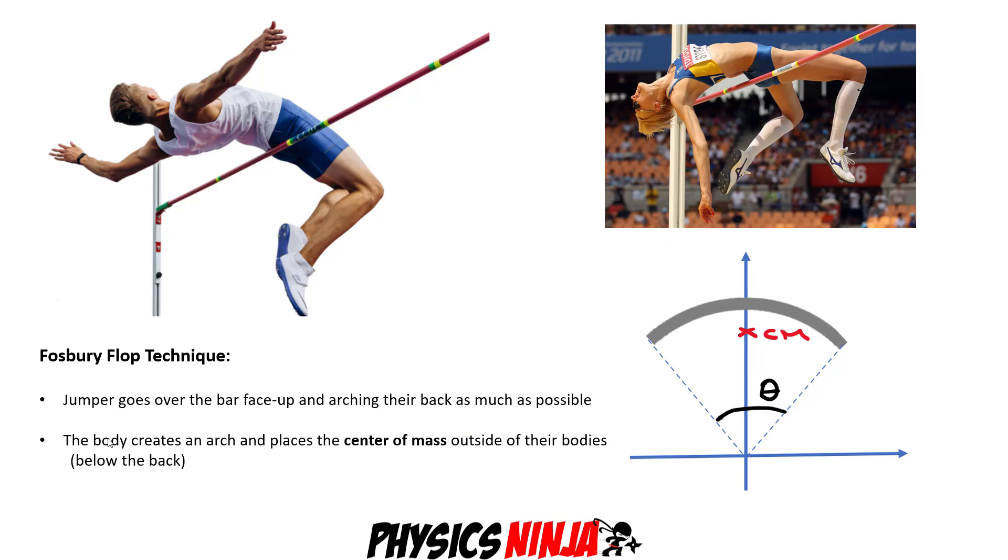Here's the chart showing this Fosbury flop technique. I have two images of jumpers going over the high jump bar. What you notice is two things. First, the jumper goes over the bar face up. The other thing is that they arch their back as much as possible. You can see both jumpers with this huge arch. What that does is when your body creates an arch like this, it moves the center of mass actually outside of their bodies. And sometimes if you arch it enough, the center of mass can actually pass below the bar, which is quite incredible. In the next slide, we're going to set up a simple model of a jumper to analyze how far the center of mass can extend beyond the body.